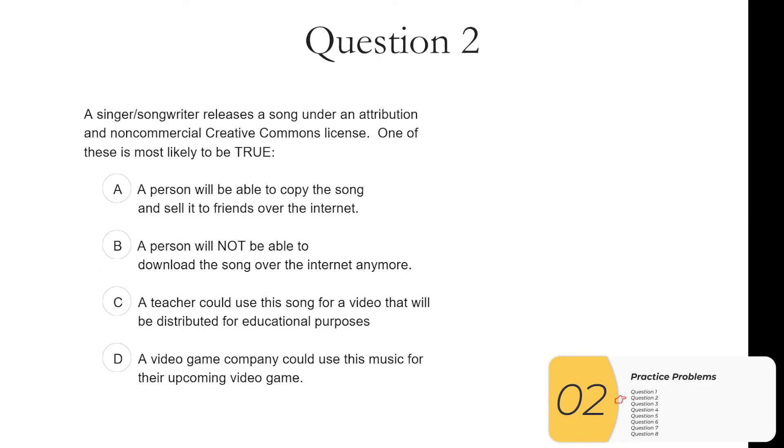Question two. A singer releases a song under attribution and non-commercial Creative Commons license. One of these is most likely to be true. A. A person will be able to copy the song and sell it to friends over the internet. No, this is not going to be true. Remember, non-commercial. B. A person will not be able to download the song over the internet anymore. This is also not true. The idea behind the Creative Commons license is that we're going to allow people to download it and use it for certain things, but not everything. So this is not true.